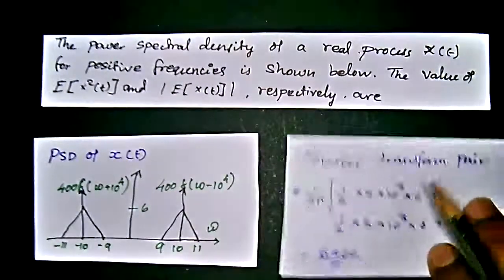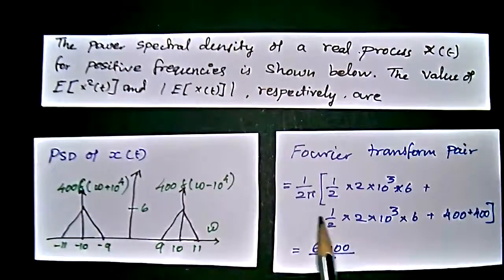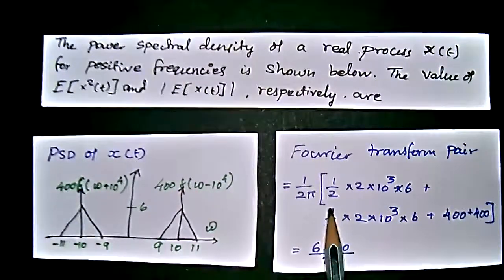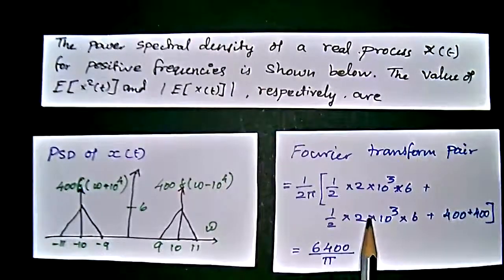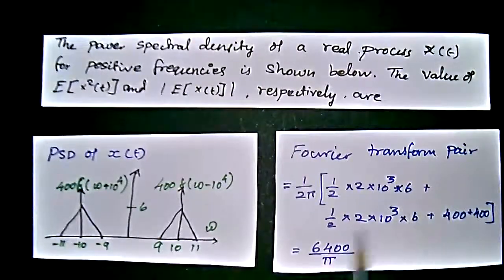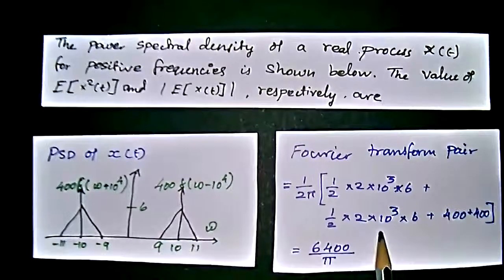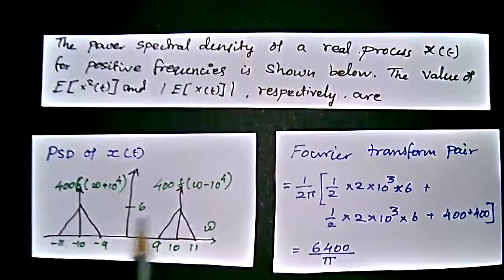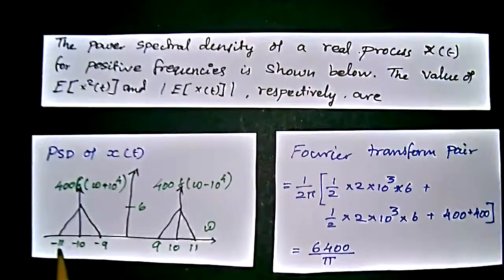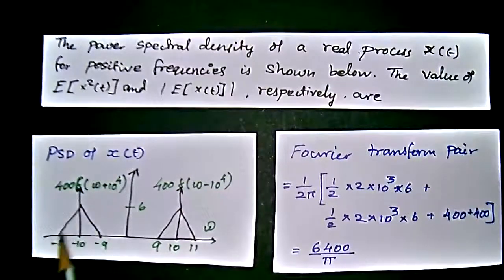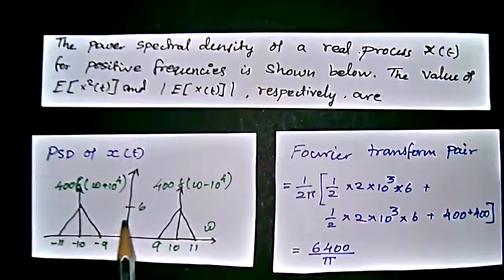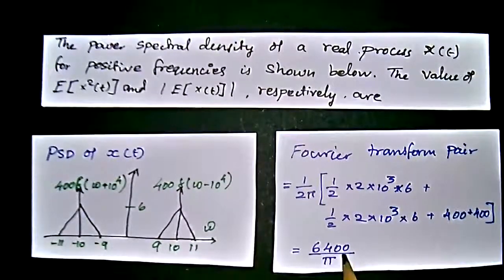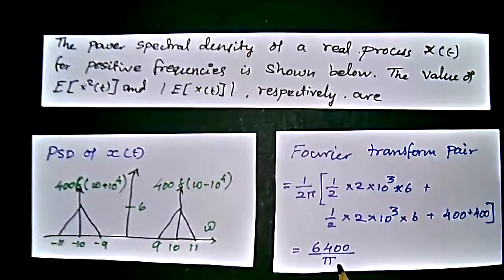Fourier transform pair of these equations: 1 by 2π multiple of 1 by 2 into 2 into 10³ into 6, plus 1 by 2, 2 into 10³ into 6, plus 400 plus 400. This 400, this 2×400, and this 1 by 2 into 2 into 10³, this ramp signal multiple of 6, the value of amplitude, both kind of things is applied. Fourier transform can be reduced to 6400 divided by π.